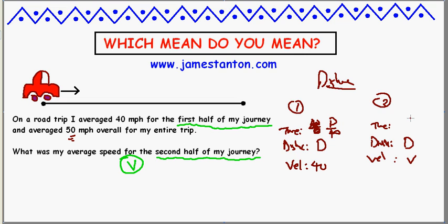Alright, and over here, time would be distance divided by velocity, d over v. Alright, so I now know the total distance I traveled is d plus d, 2d. I know the total time it took me, d over 40 plus d over v.